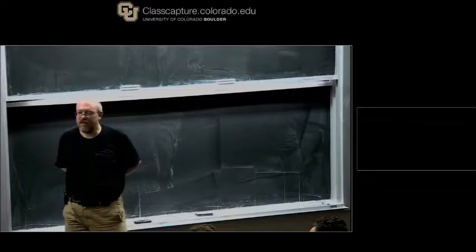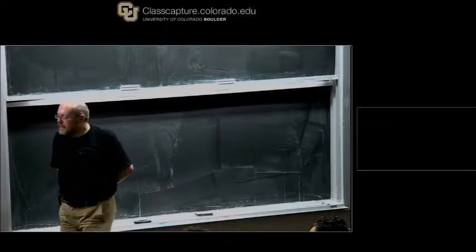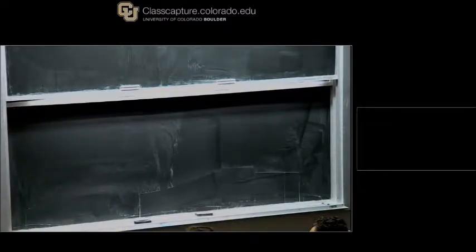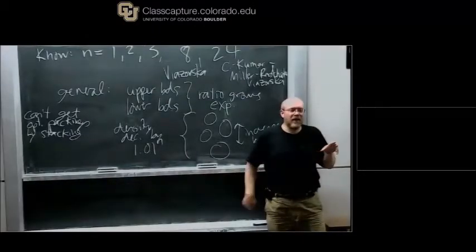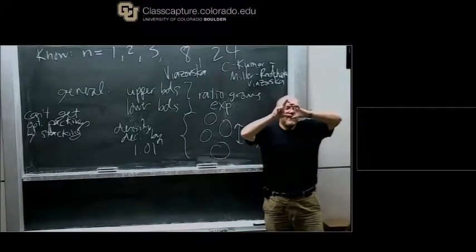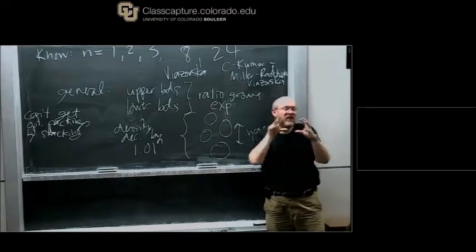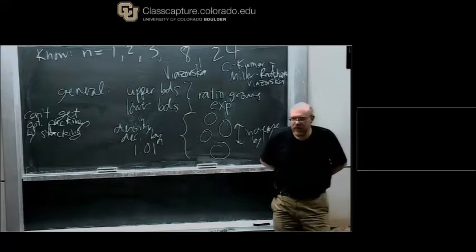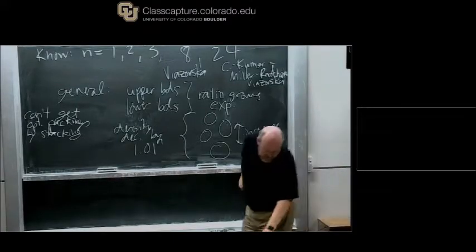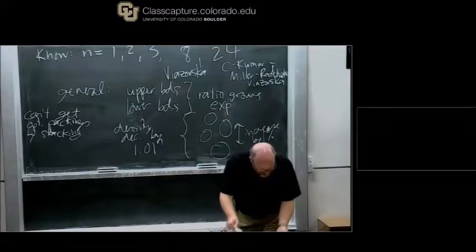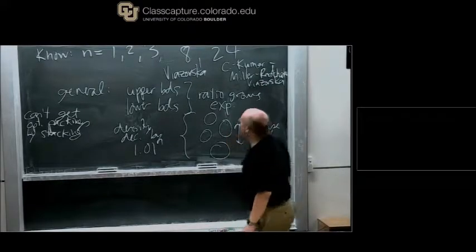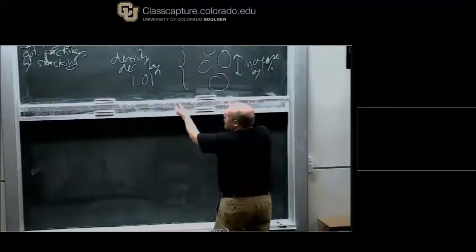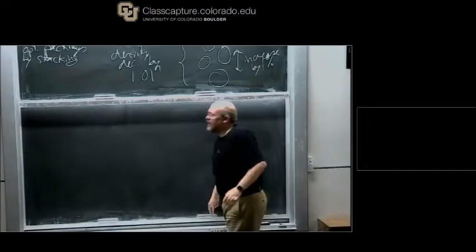Is there a Kepler-conjecture analog for binary-size spheres in three dimensions? There's nothing quite as famous, but there are definitely some conjectures about particular radii. For example, if you take the face-centered cubic and take smaller spheres that exactly fit into the gaps, that's certainly believed to be optimal, but not proved.